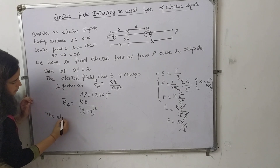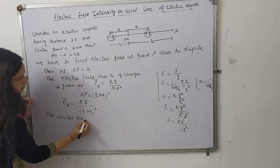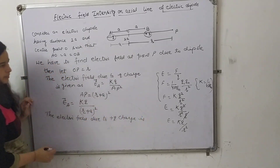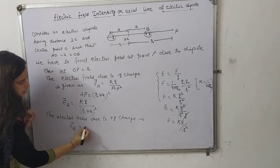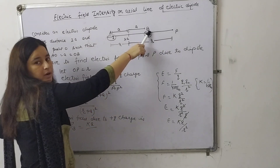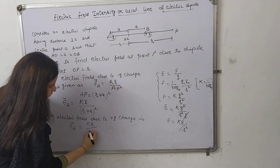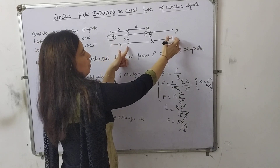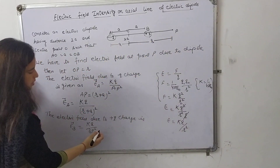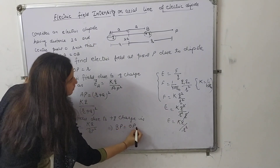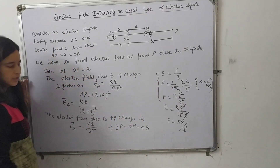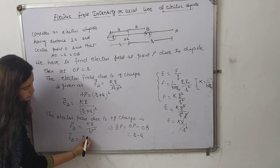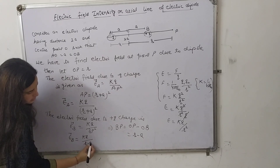The electric field due to the plus Q charge at point B is Eb equal to KQ upon BP squared. To find BP, it is OP minus OB, which is R minus A. Therefore, the electric field Eb at point P due to plus Q is KQ upon (R minus A) squared.